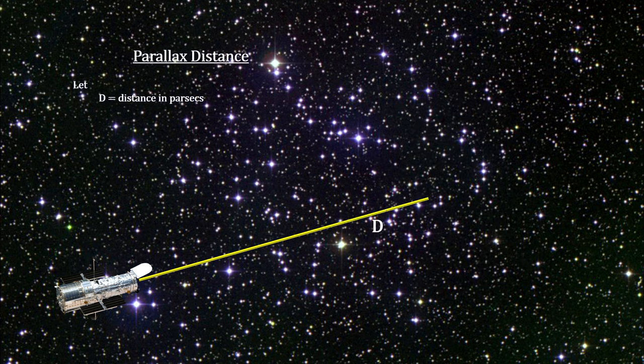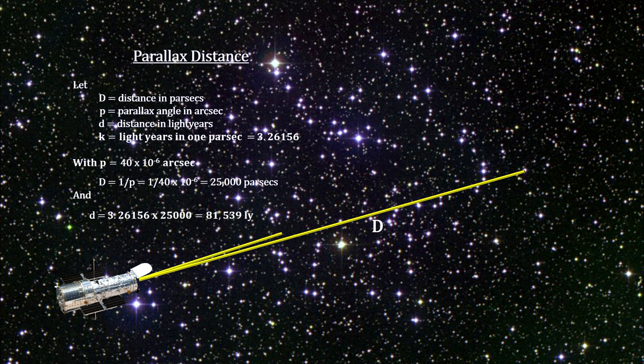With spatial scans, Hubble can achieve measurement precision of a parallax angle of 40 micro arc seconds. This translates into distance measurements as far as 80,000 light years away.